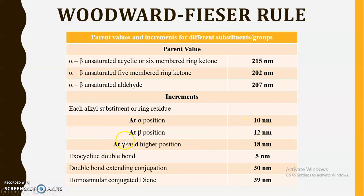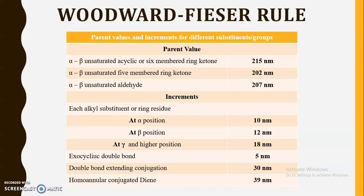If ring residues or alkyl substitutions are present at the gamma position, add 18 nanometers. If an exocyclic double bond is present, add 5 nanometers. If a double bond is extending the conjugation, add 30 nanometers. And if along with the alpha, beta unsaturated ketone a homoannular diene is present, then add 39 nanometers. So this covers the parent values and the increments.